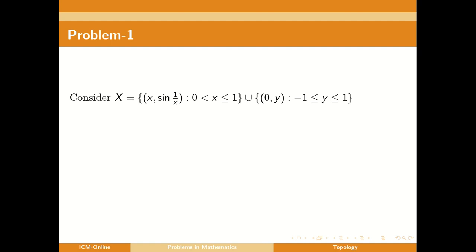Consider X to be the set of all ordered pairs (x, sin(1/x)) such that 0 < x ≤ 1, union the set of all ordered pairs (0, y) such that -1 ≤ y ≤ 1, as a subspace of R² and Y = [0, 1) as a subspace of R.